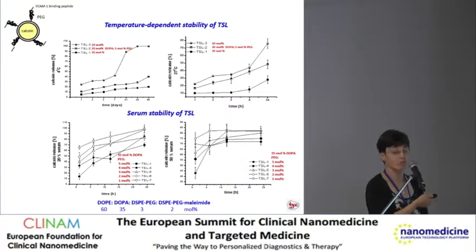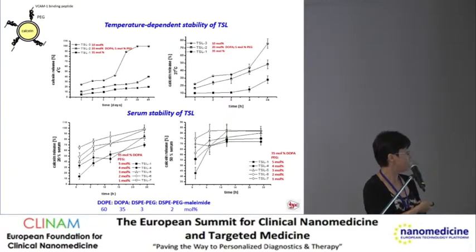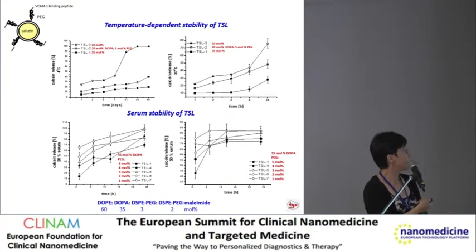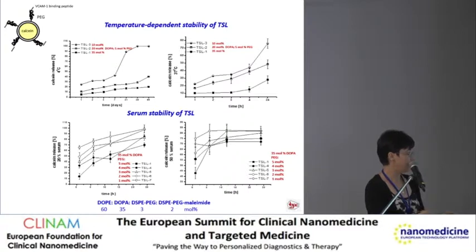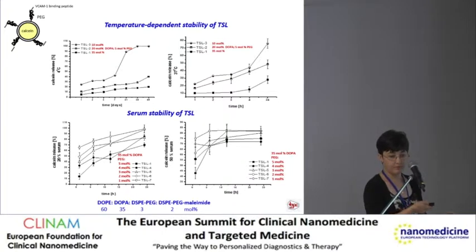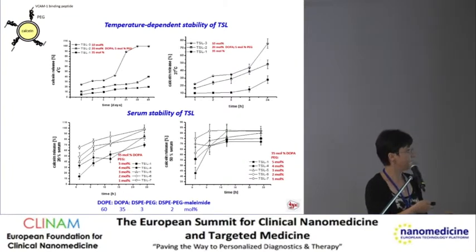The presence of PEG on the surface could antagonize the triggered release mechanism. We investigated the effect of PEG in the membrane using calcium release studies in 20% and 50% serum. The best results were obtained with target-sensitive liposomes composed of 60% DOPE, 35% DOPA, and 5% PEG total, and this composition was used for all further functional studies.